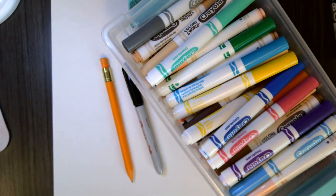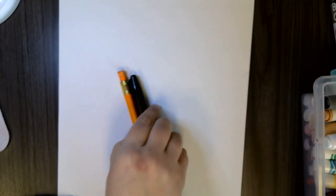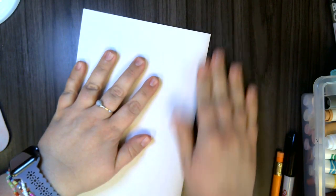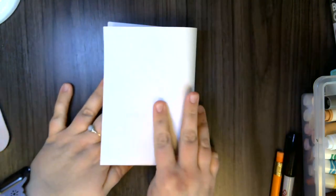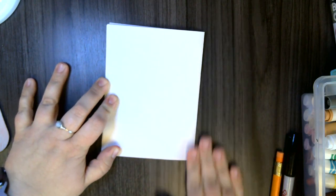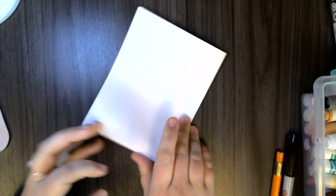So the first step in this project is you are going to take your piece of paper—I'm using a white piece of construction paper—and you are going to fold it in half. And then fold it in half again, like so, almost as if you're making a mini card.